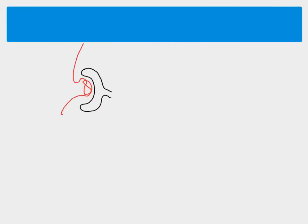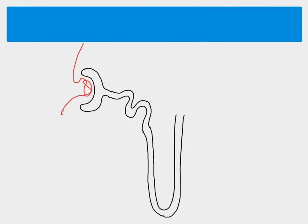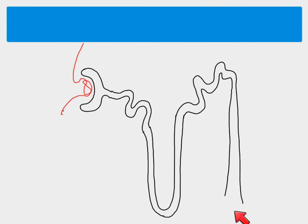This process takes place in this part here. We've got an arteriole coming in, then capillaries forming the glomerulus and moving back out again, and then this is the Bowman's capsule, which is the first part of our nephron. Filtrate is formed here and then moves down through the nephron: firstly through the proximal convoluted tubule, then down and back up the loop of Henle, through the distal convoluted tubule, and then finally down through the collecting duct. By the time it gets to the end, the filtrate is urine.